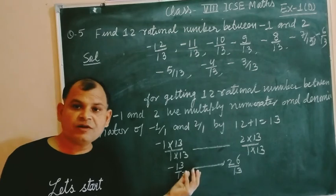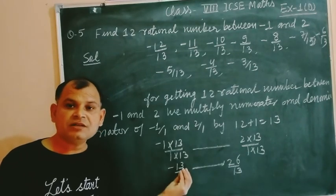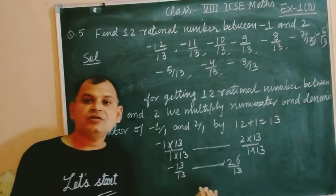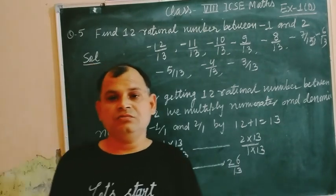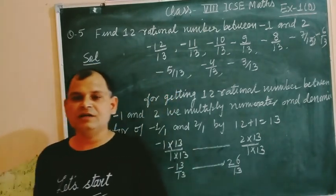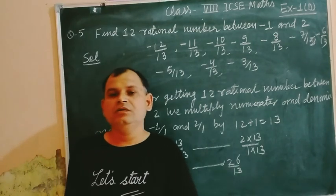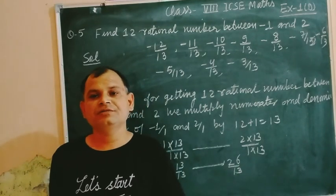There are infinitely many rational numbers. You can also take from here, that is 25 by 13, 24 by 13, 23 by 13, 22 by 13. In this way, there will be different answers. I hope you got it. Thanks so much.